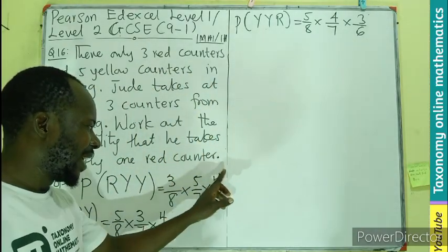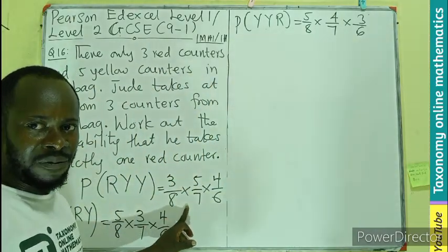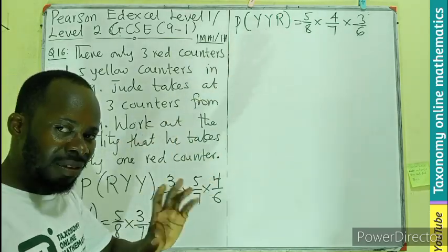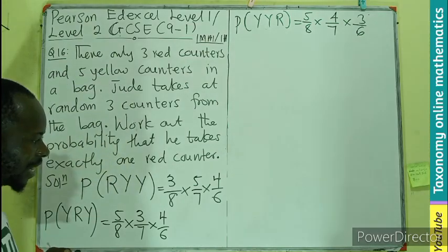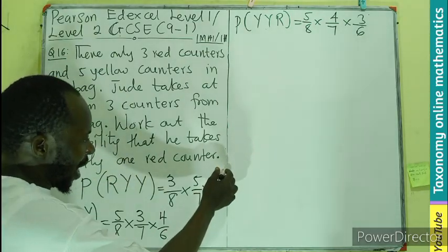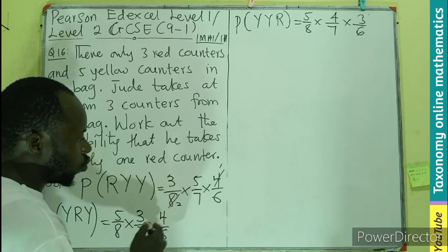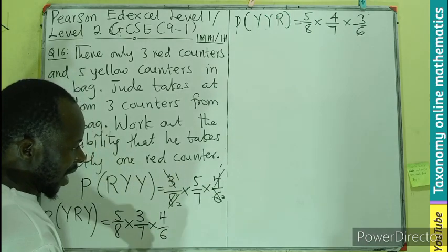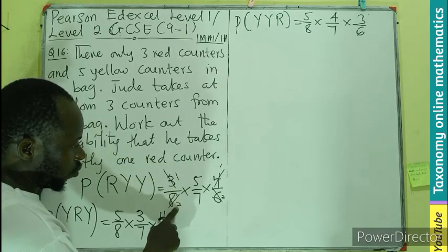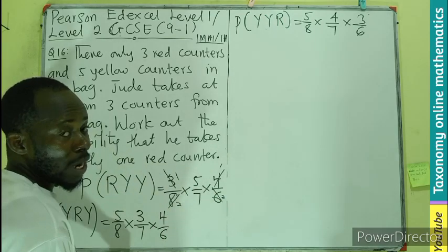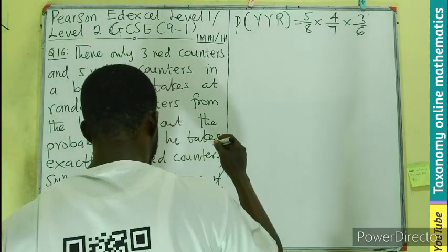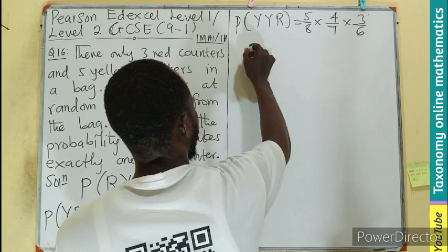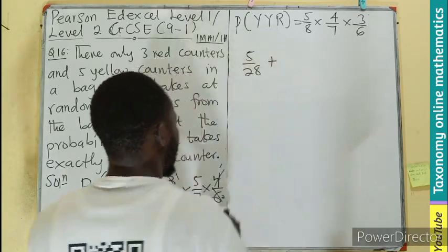So we can say that this is going to be the first probability, or the second, or the third. So or means addition. Let's see if we can simplify this further. We know four can go here one, four can go here two. Three can go here one, three can go here two. So I'll be having five divided by two times seven times two. That'll be 28. So this is going to be the first one will be 25 over 28 plus.